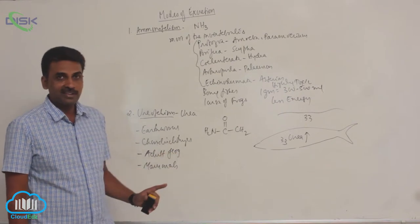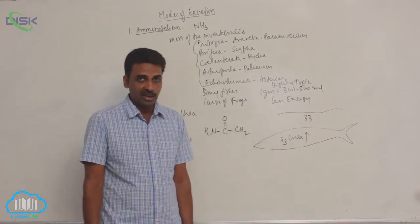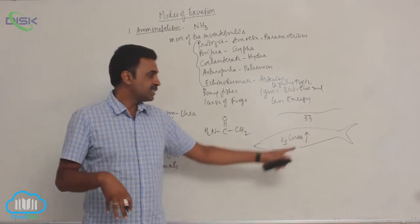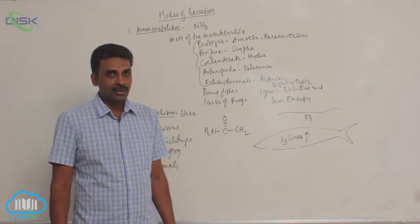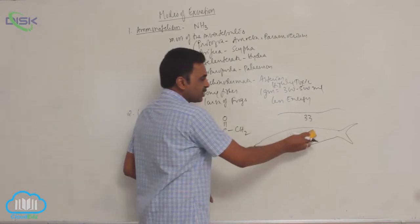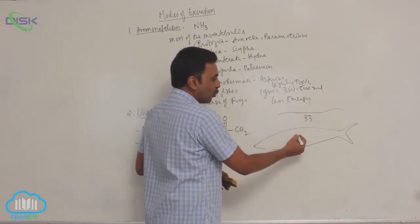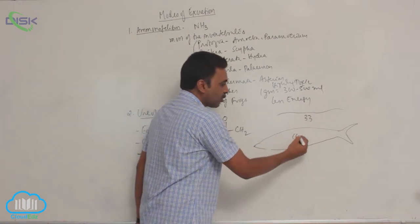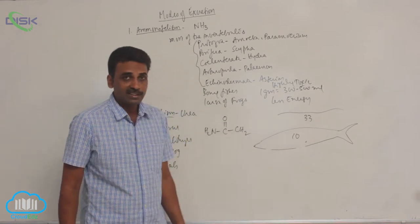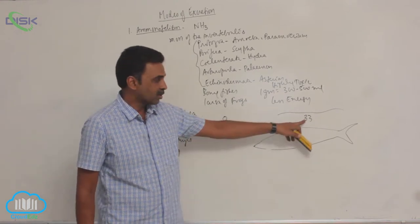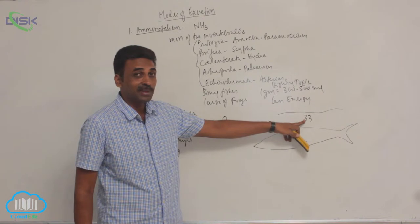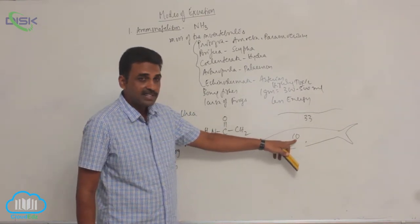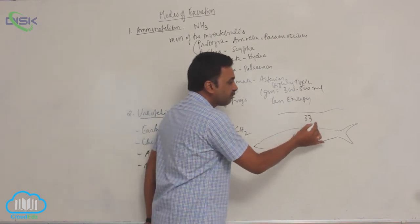Chondrichthyes like sharks retain urea inside their blood. If the concentration outside in seawater is more, for example, concentration inside is 10 and outside is 33 ppt, water will leave the body when concentration inside the blood is less and outside is more.